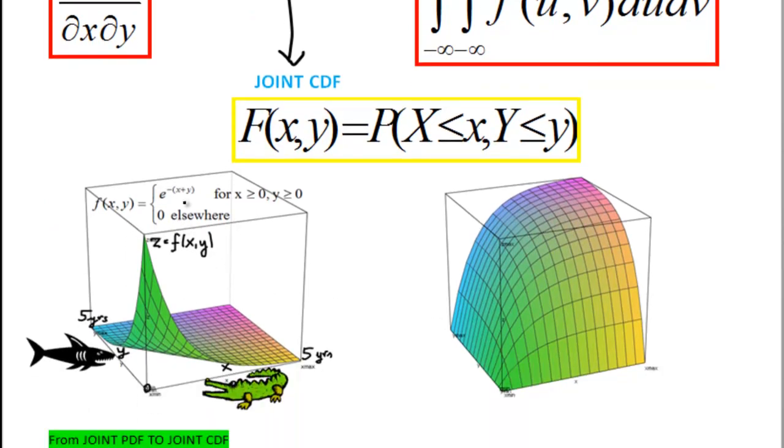So for instance here, e to the power of minus x plus y is a joint PDF which captures the two underlying variables, i.e. time to the next shark and croc attack. But in this form we can't really derive any meaningful probabilities.